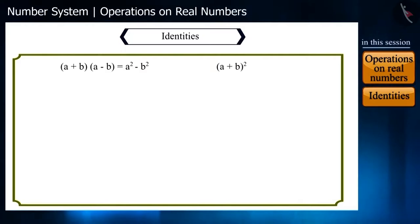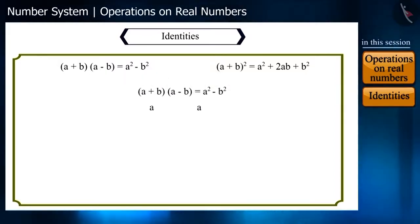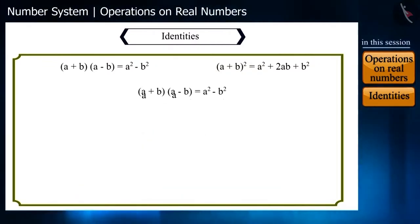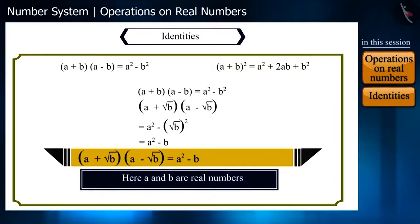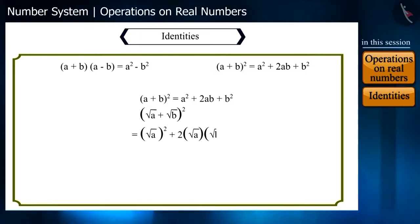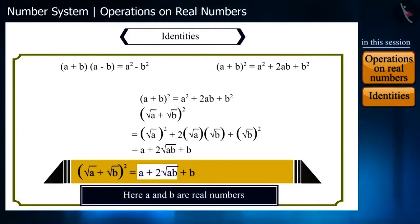Using the standard algebraic identities where a and b are real numbers, if we replace a with √a and b with √b in the first identity, we derive expanded forms involving √a and √b. Applying the same to the second identity, we get √a² + 2√a·√b + √b², where √a·√b becomes √(ab), and finally we get a + 2√(ab) + b.